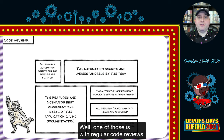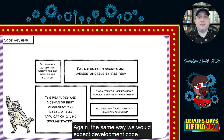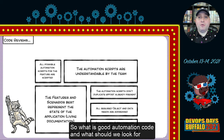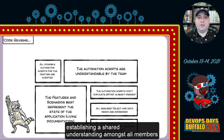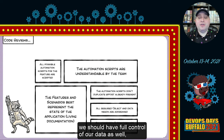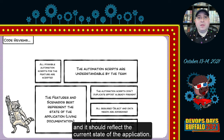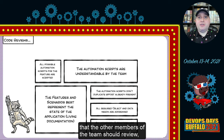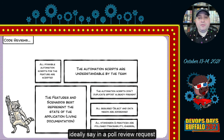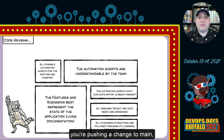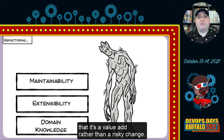One habit is regular code reviews — the same way we'd expect development code to be treated, we should treat automation code. Good automation code means: a shared understanding amongst all team members about the purpose of that test; tests that can be executed across multiple environments; full control of your data; and tests that reflect the current state of the application. You can have additional team agreements on styling, reviewed in a pull request or virtual meeting, to ensure every change pushed to main is a value add rather than a risky change.